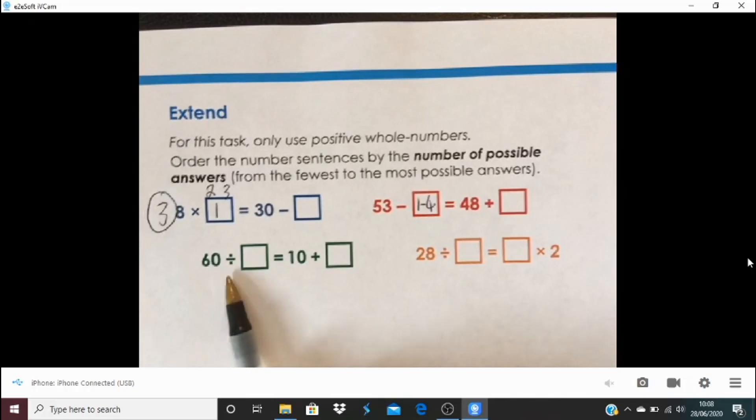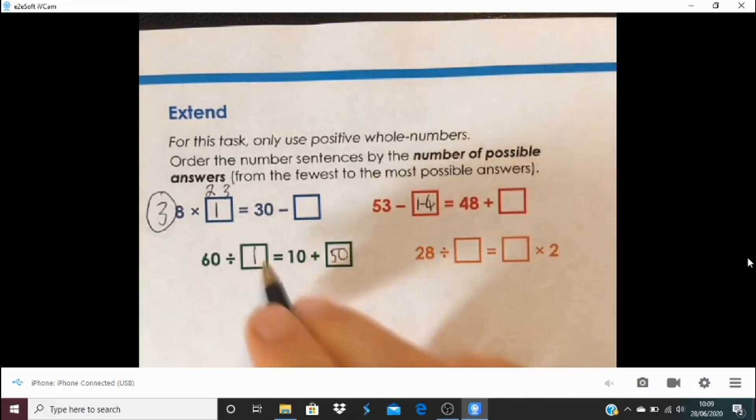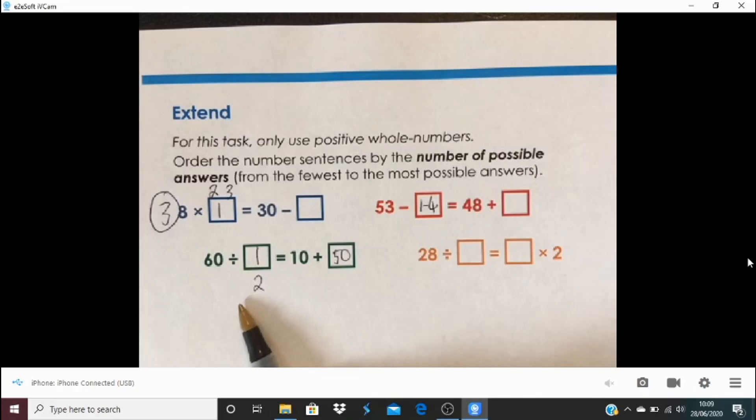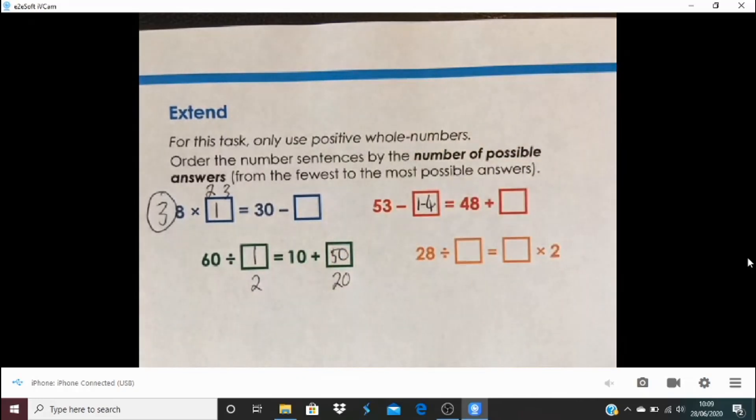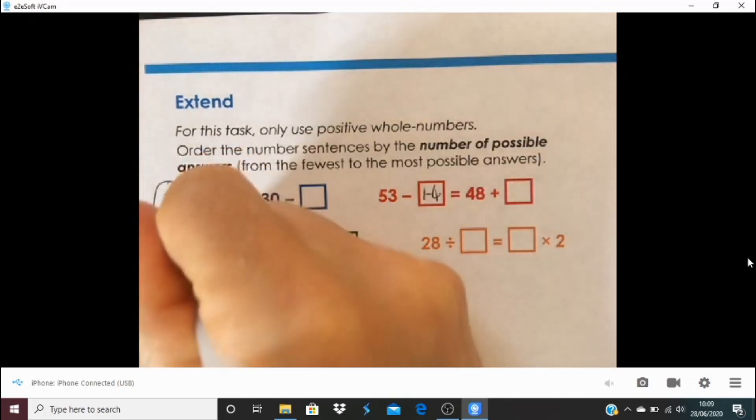Now, what about 60 divided by a number equals 10 plus... And here really, the key thing is thinking about factors of 60. So I could be doing 60 divided by 1, and that would give me 10 plus 50. It could be 60 divided by 2, that gives me 30, so it would have to be 10 plus 20. It could be 60 divided by 3, that gives me 20, so that must be 10 plus 10. Or it could be 60 divided by 4, that gives me 15, 10 plus 5. Or it could actually be 60 divided by 5. And 5 times 12 is 60, and so that would have to be 2 there. So how many ways have we got there? We have got a whopping 5 ways there.